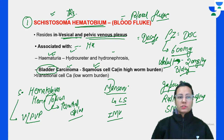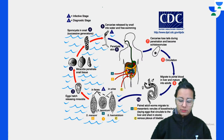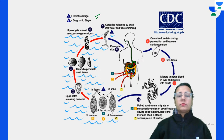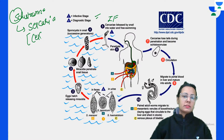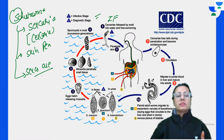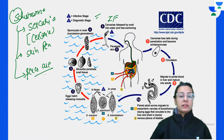Praziquantel is the drug of choice for Schistosoma. Now for the life cycle of Schistosoma - the most important thing to remember: the infective form is cercaria (S4S). Schistosoma has three S4S exceptions: cercaria as infective form, skin penetration as mode of infection, and separate sexes - it is the only trematode that is dioecious while others are not. The infective form is cercaria and infection is by skin penetration.